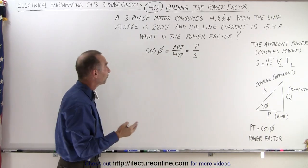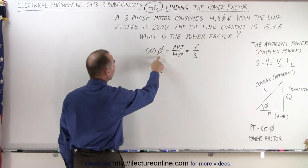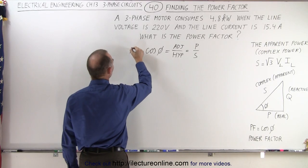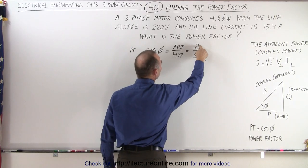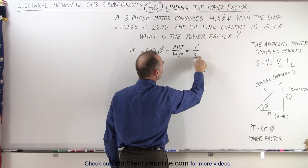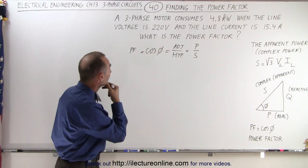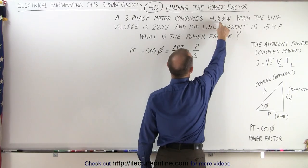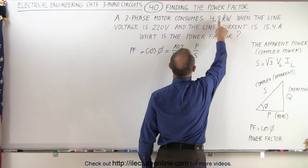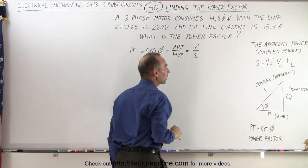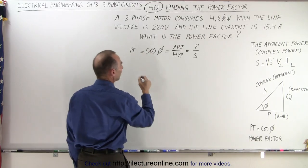So in essence, we can find the cosine of the phase angle which is the power factor if we know the real power and if we know the measure, not the imaginary, but the complex power or the apparent power. Now the real power is given to us at 4.8 kilowatts, we just don't know what the complex power is. So let's figure that out.